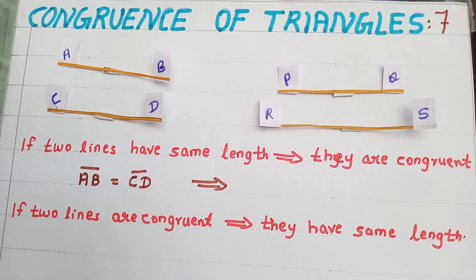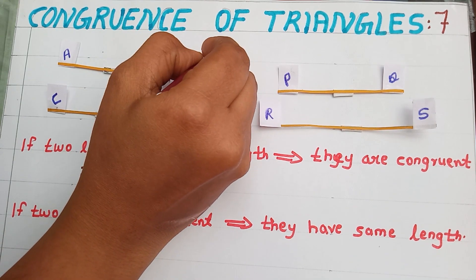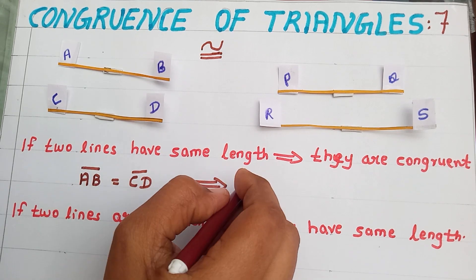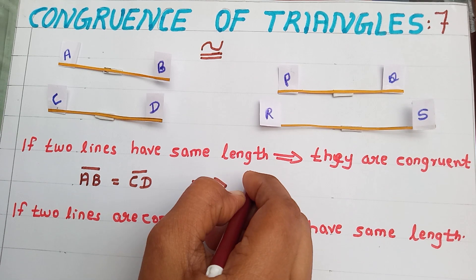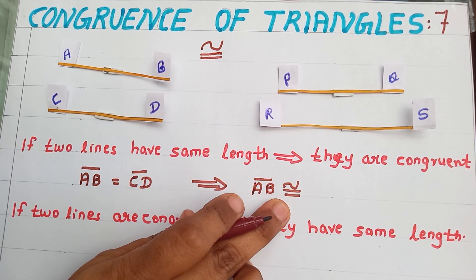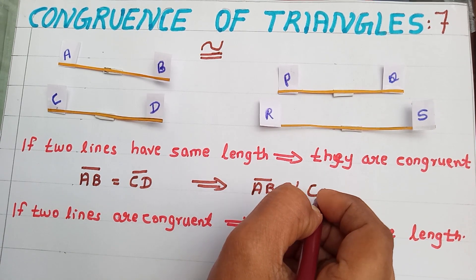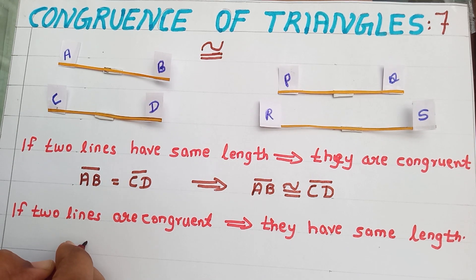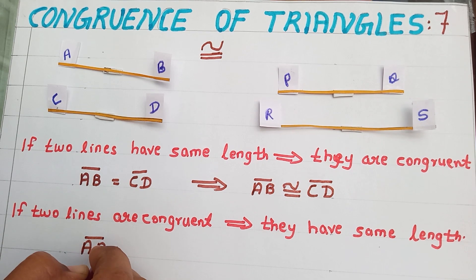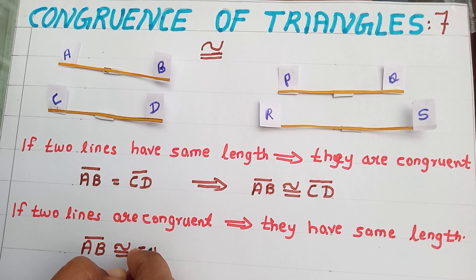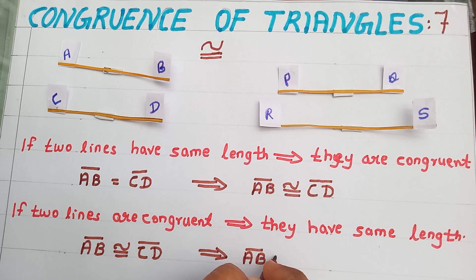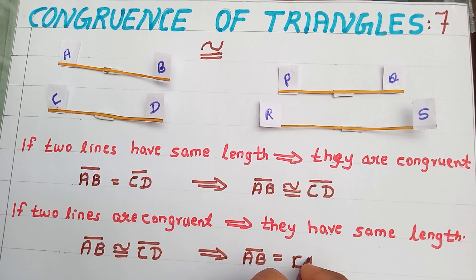What is the symbol for congruency? This is the symbol for congruency. So they are congruent — instead of that, I can write: line segment AB is congruent to line segment CD. If two lines are congruent, that means line segment AB is congruent to line segment CD, which implies they have same length — that is, line segment AB equal to line segment CD.